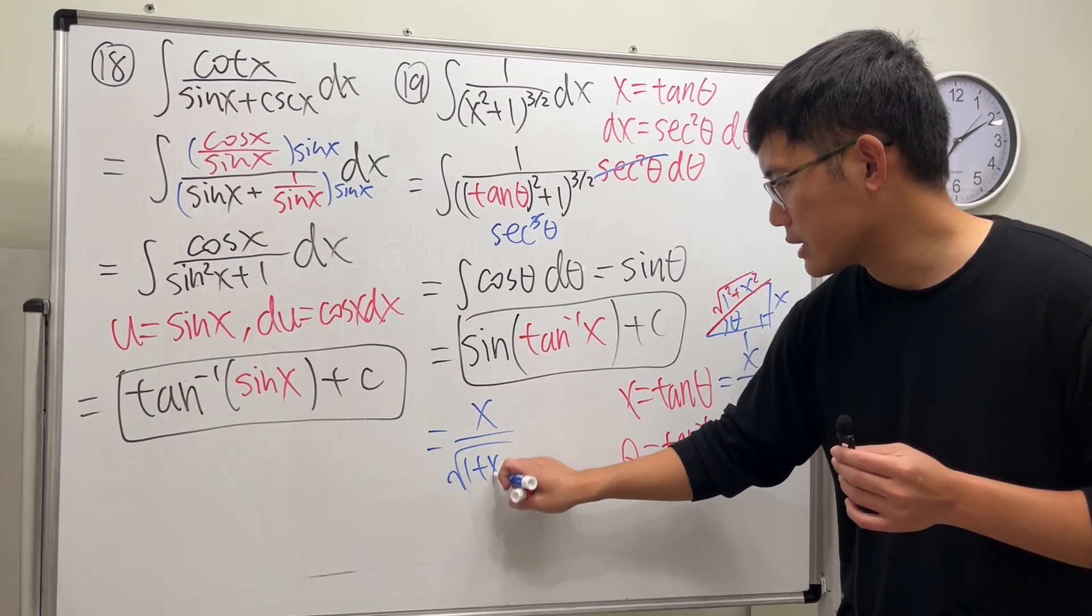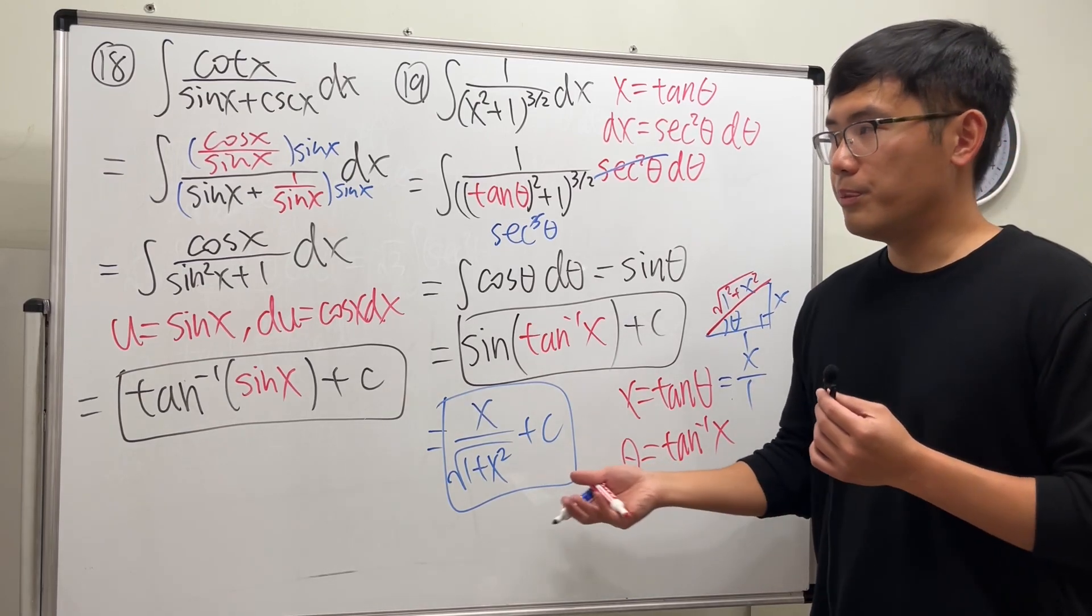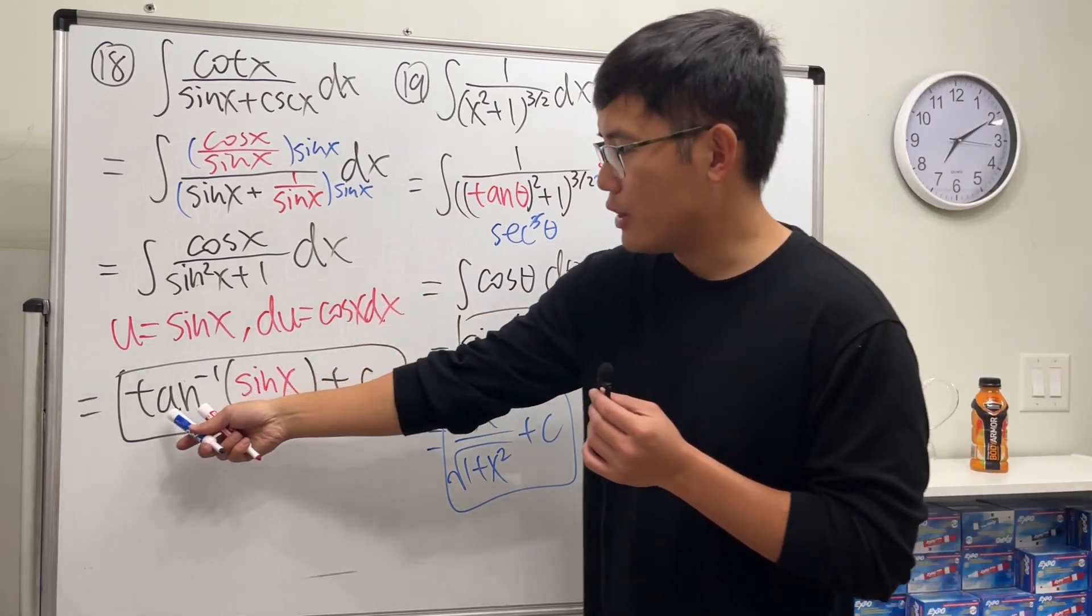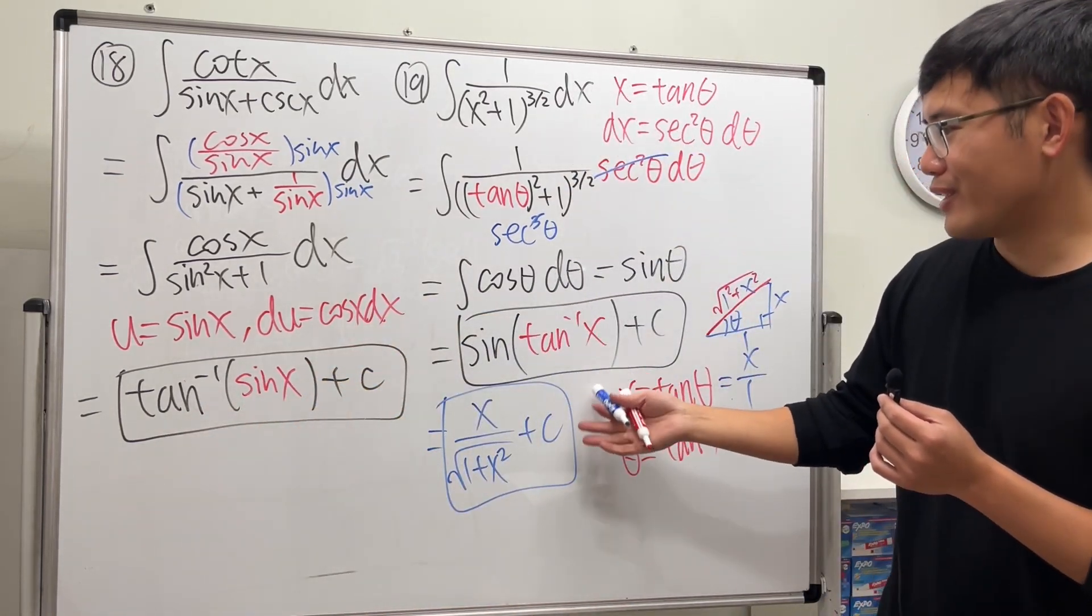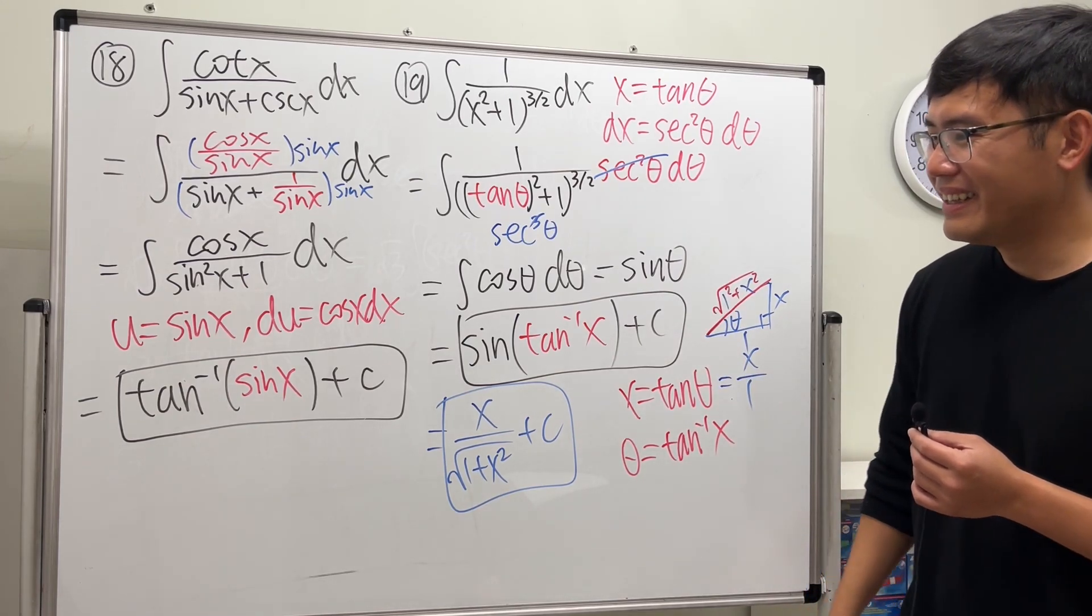Plus C. This is the answer that we usually provide. But earlier we had inverse tangent of sine x, so of course right here I put down sine of inverse tangent of x. And you might be wondering, can we do the same thing for this, like draw a triangle? Not really.